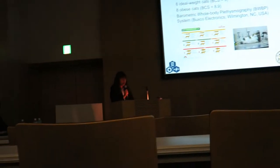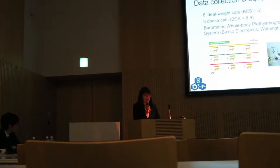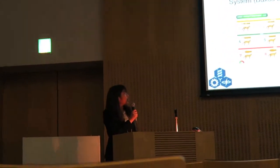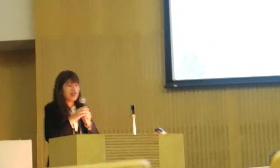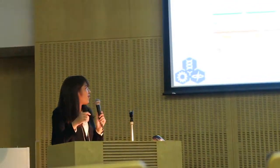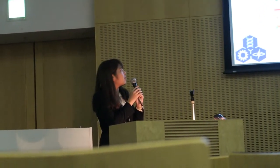You can see this chart — this is the body condition score chart. It describes how obese the cats are from their body shape or body landmarks. You can see level 1 cats look quite skinny, and at level 9 the cats look very round and obese. In my case, I have 6 ideal weight cats at level 5 and 8 obese cats at levels 8 and 9.